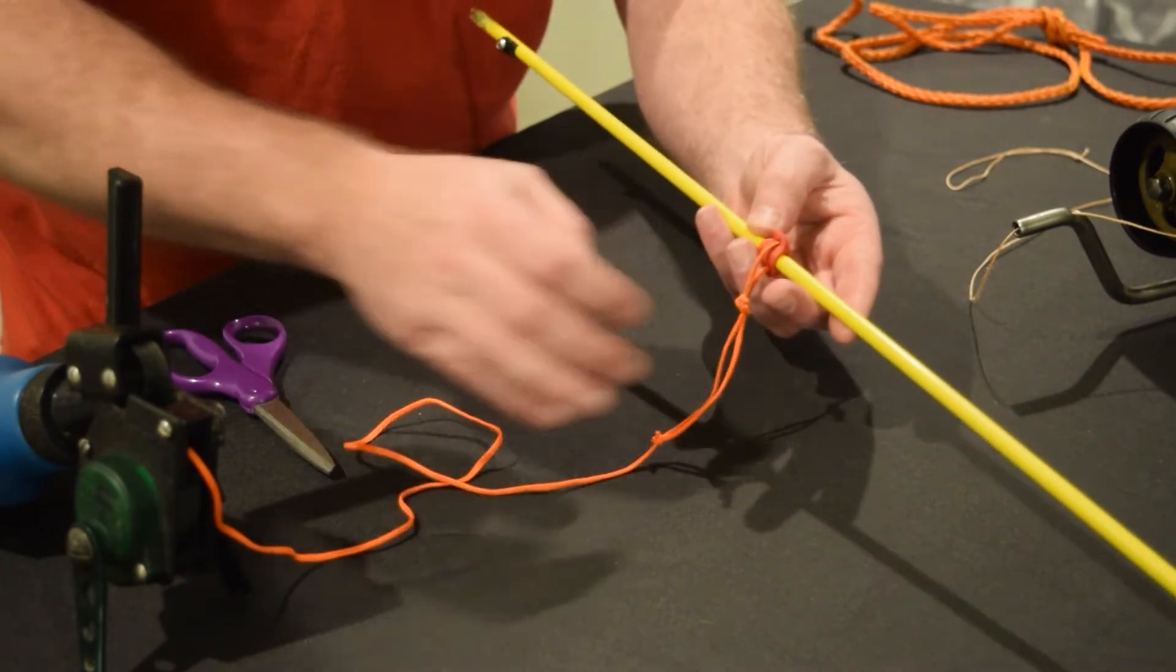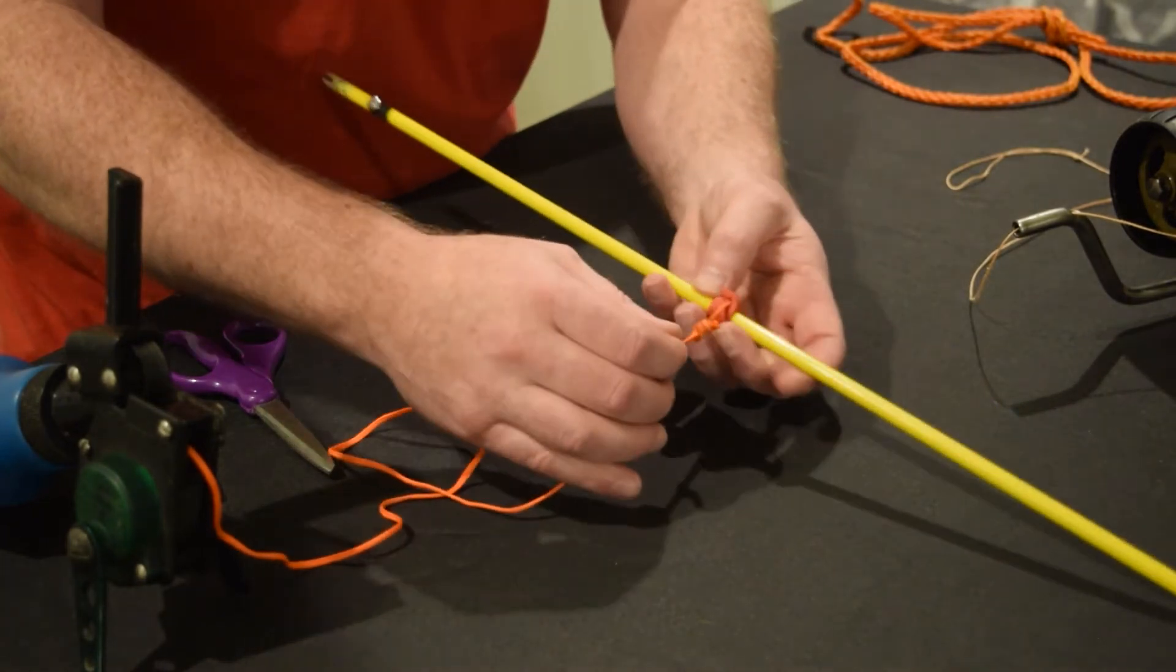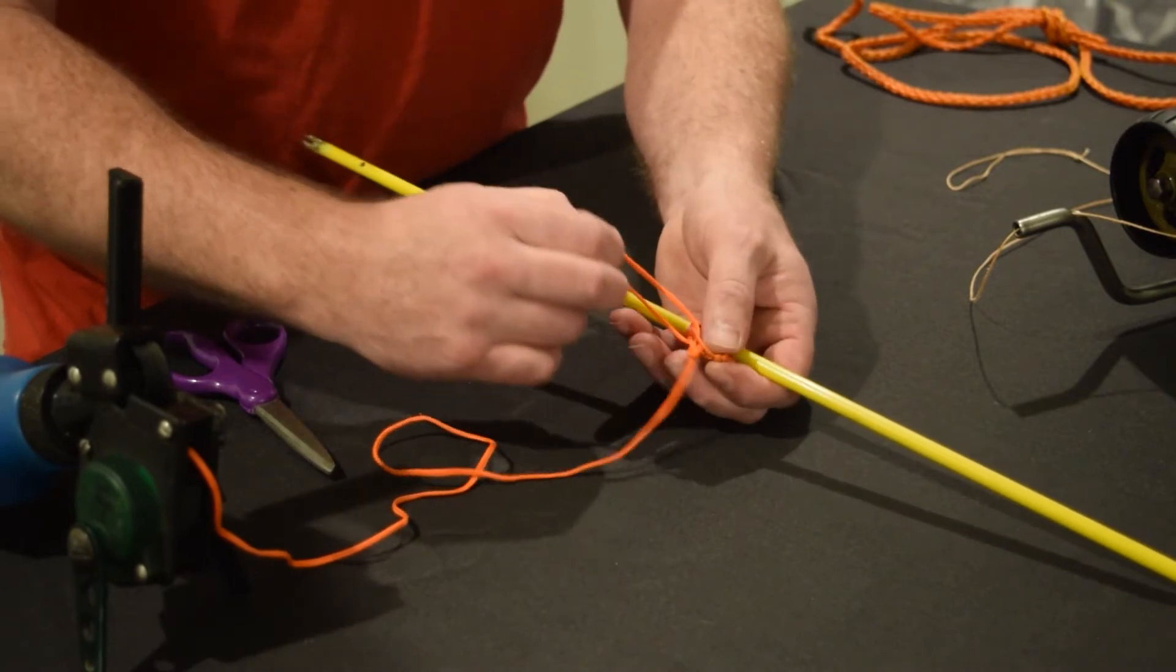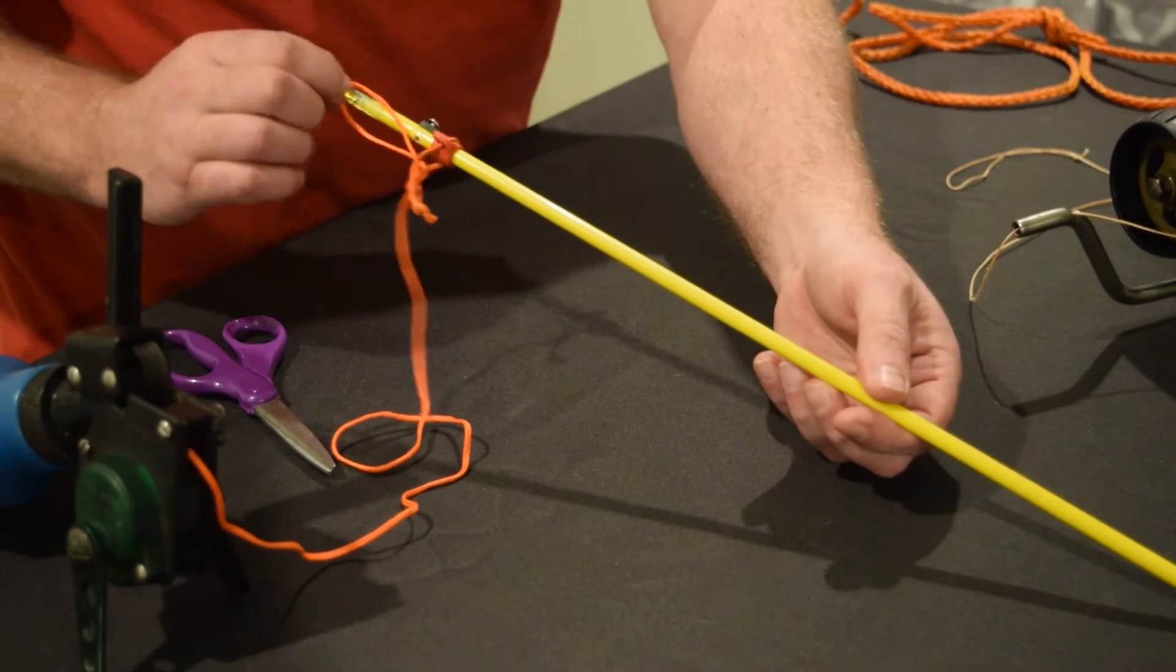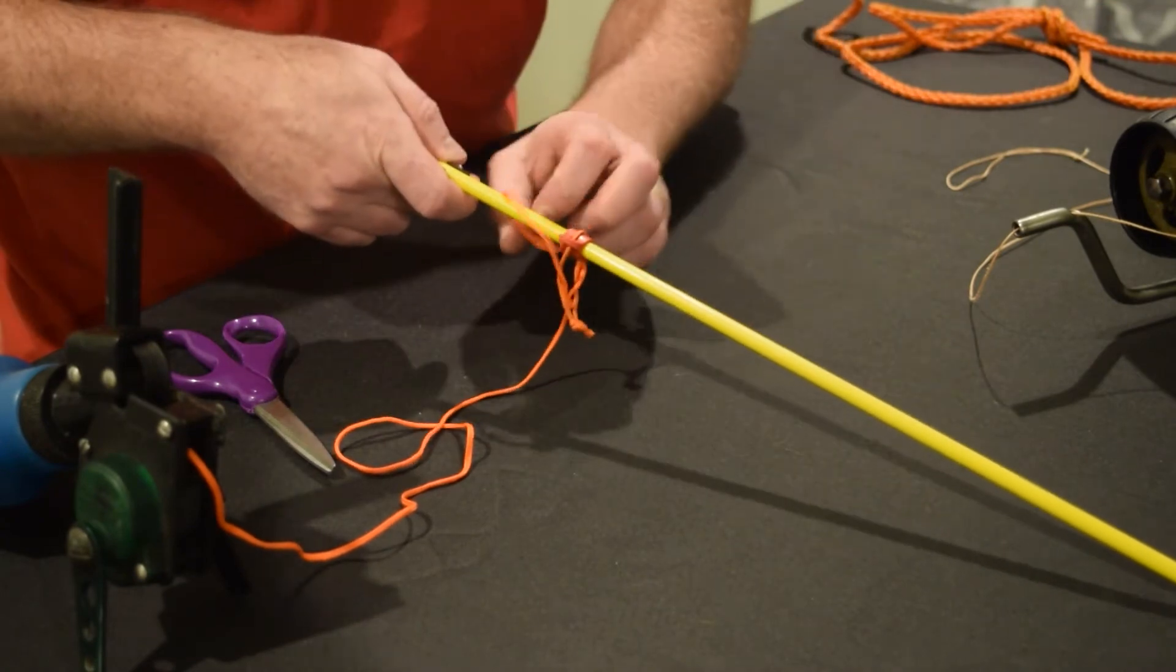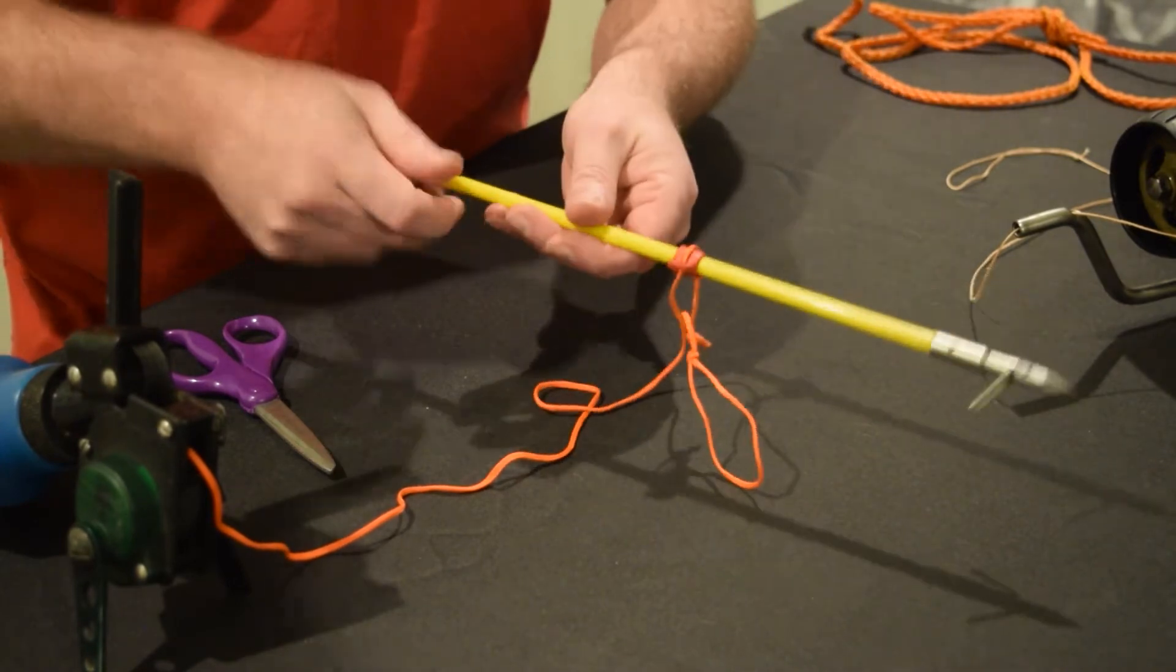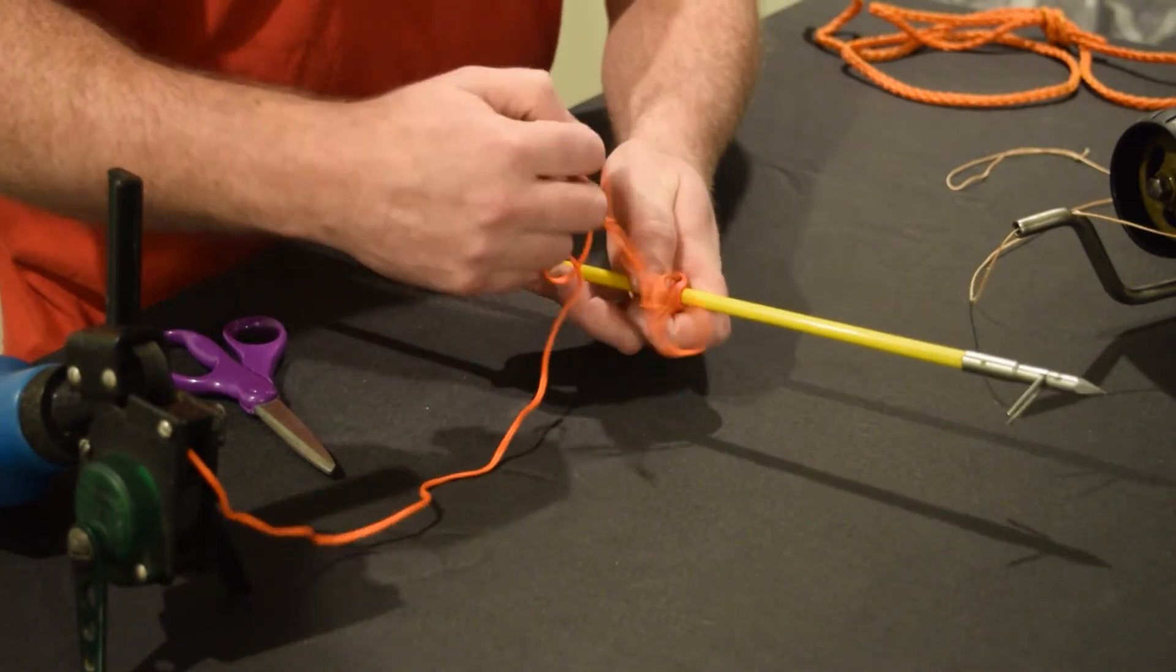And taking this arrow off is relatively easy. Just loosen the first loop back up again. Come down, go over the nock, work it down to the other end of the arrow, go over the tip, and then just slide the loop out.